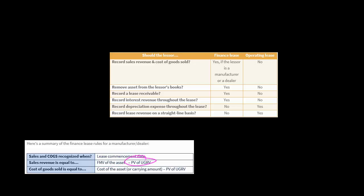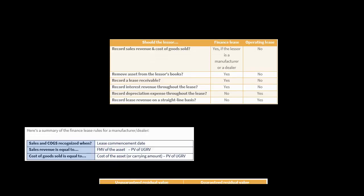So sales revenue equals fair market value of the asset minus the present value of the unguaranteed residual value (UGRV). If there's a guaranteed residual value, we would not subtract anything — it's just fair market value. And the cost of goods sold would be the cost of the asset or its carrying amount minus the present value of the unguaranteed residual value. If there's a guaranteed residual value, you just have the cost of the asset.